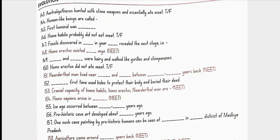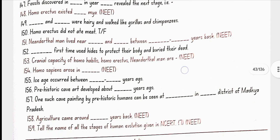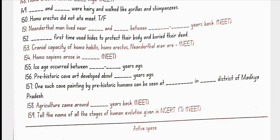Human-like beings are called hominids. First hominid was Homo habilis. Homo habilis probably did not eat meat. Fossils discovered in Java in the year 1891 revealed the next stage, Homo erectus. Homo erectus existed 1.5 million years ago. Dryopithecus were hairy and ape-like gorillas and chimpanzees. Homo erectus ate meat.